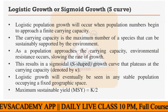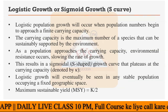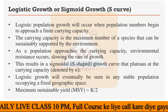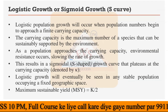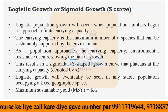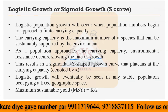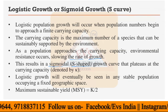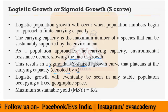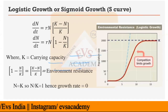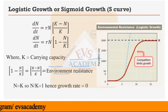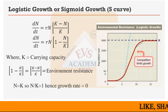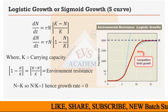As a population approaches the carrying capacity, environmental resistance occurs, slowing the rate of growth, and there will ultimately be no growth at all. This creates a sigmoidal or S-shaped growth curve that plateaus at the carrying capacity K. You can see this plateau point in the graph.